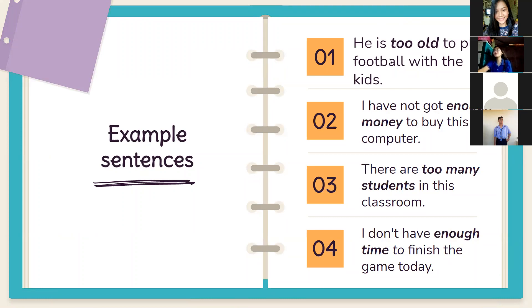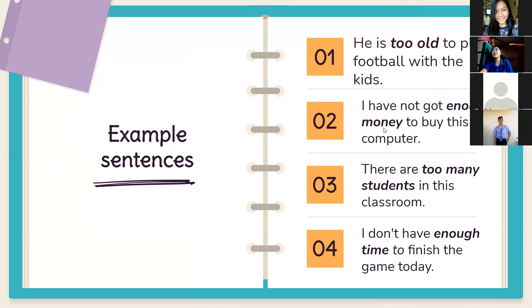Here are some more examples. Number one: 'He is too old to play football with the kids' — that uses 'too' plus adjective. Number two: 'I have not got enough money to buy this computer' — that uses 'enough' plus noun. Number three: 'There are too many students in this classroom' — using 'too many' plus noun. Number four: 'I don't have enough time to finish the game today.'